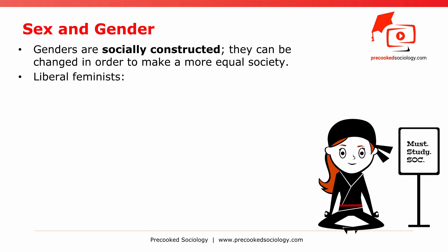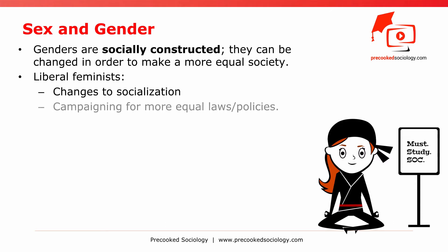Liberal feminists believe this can be achieved through changes to socialization to change norms and values in relation to gender — for example, by teaching boys and girls that they can both be successful, and choosing more gender-neutral toys. They also advocate campaigning for more equal laws and policies. For example, there has recently been a change in the Church of England to allow female bishops, and parents can now share parental leave equally.